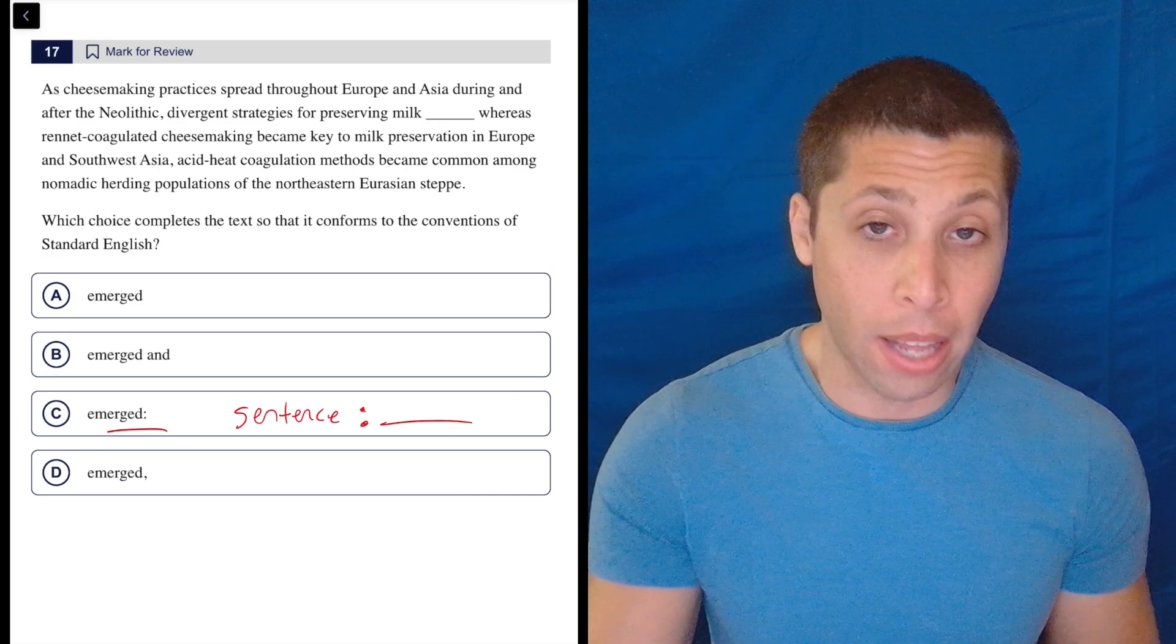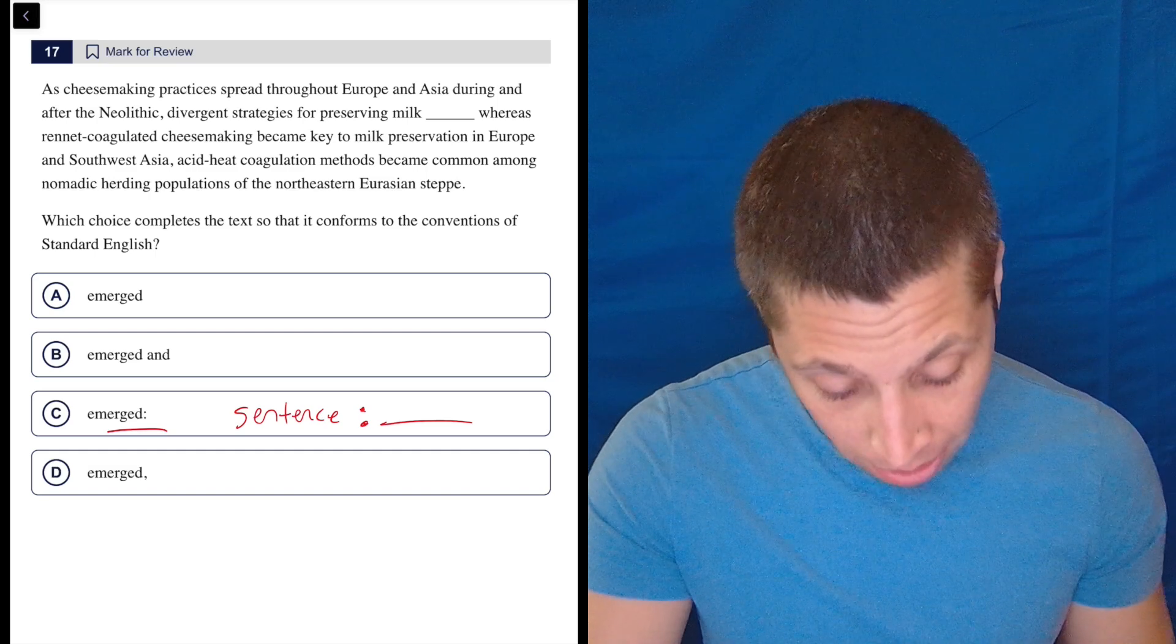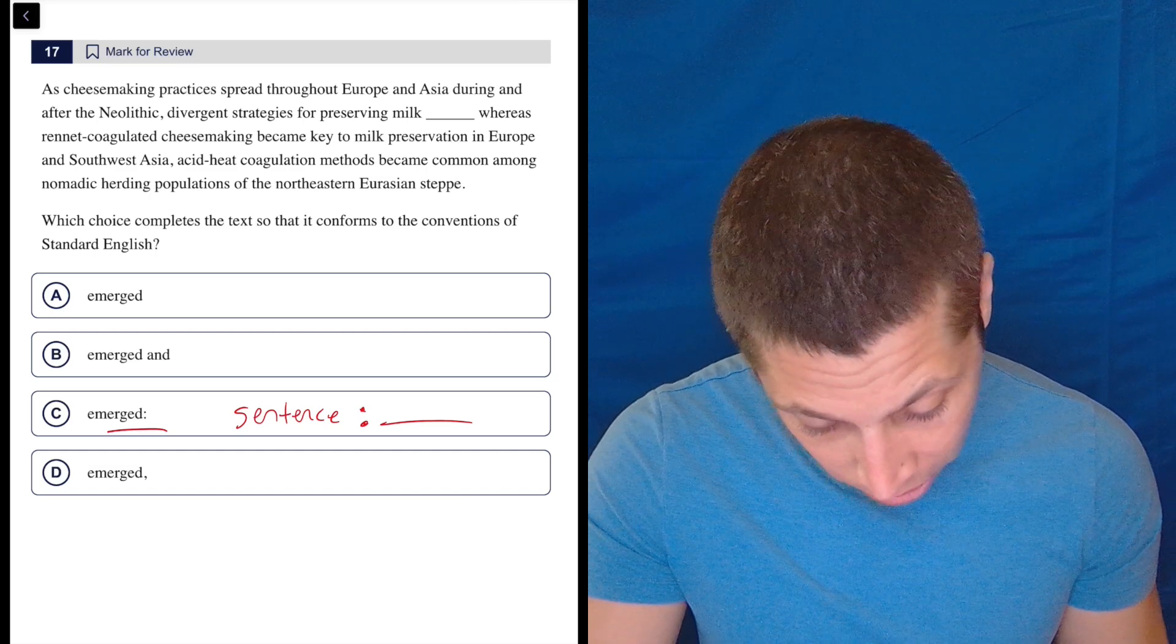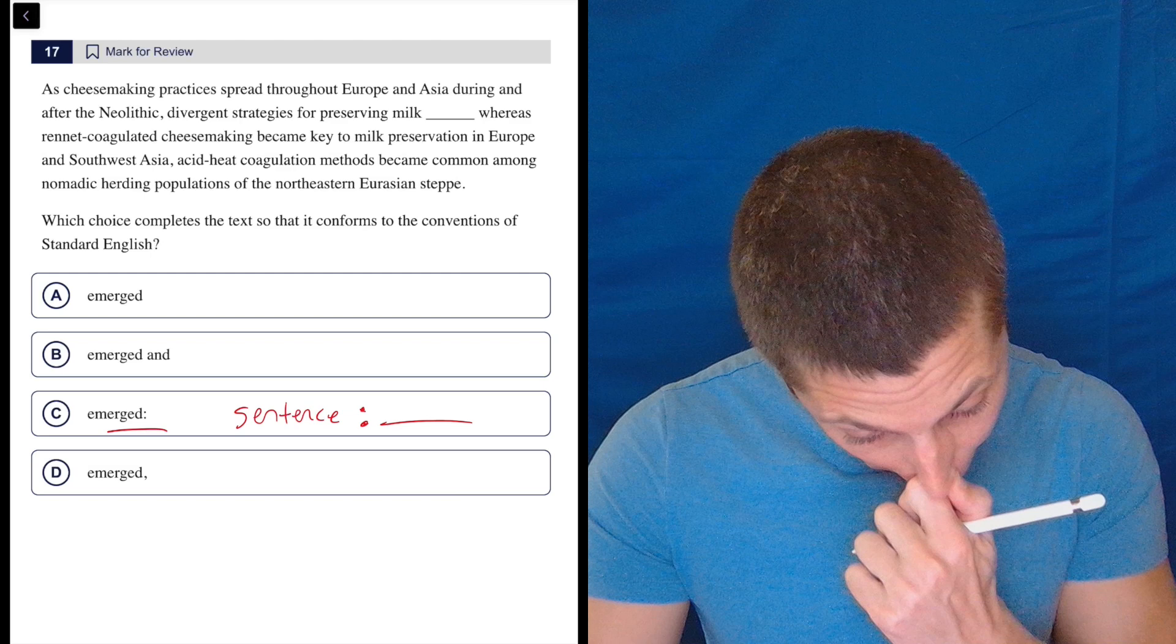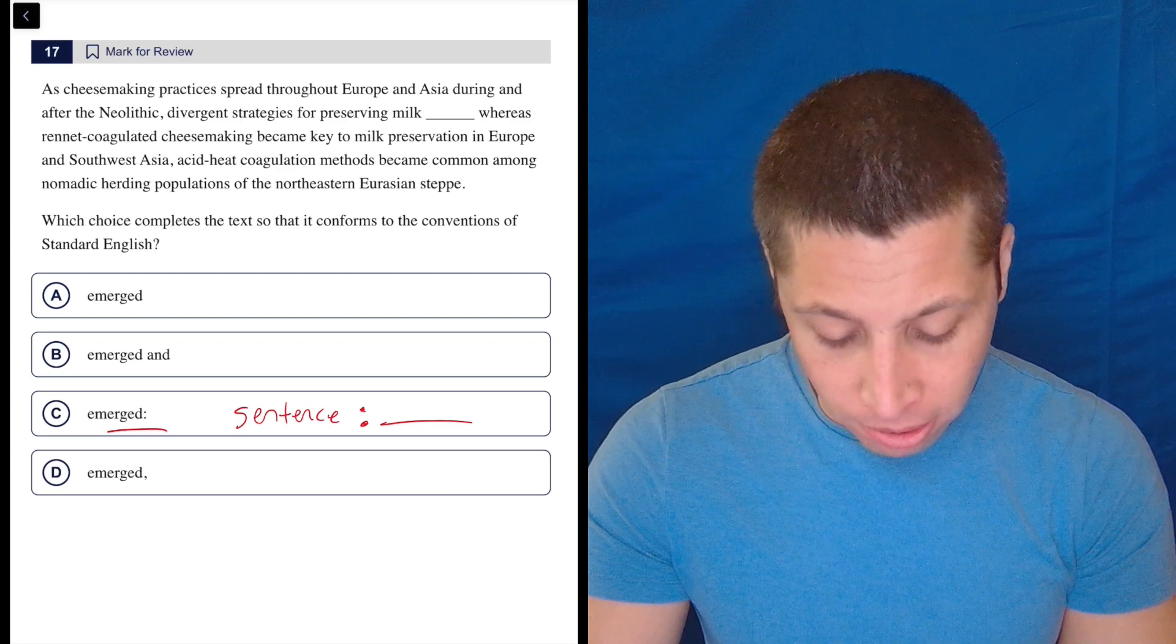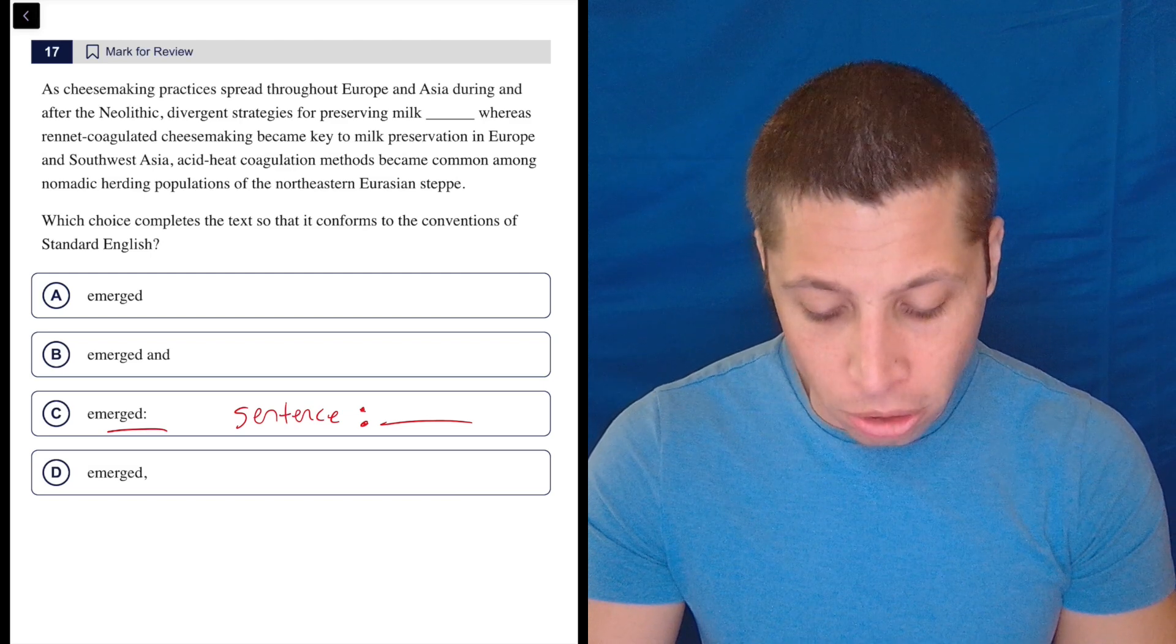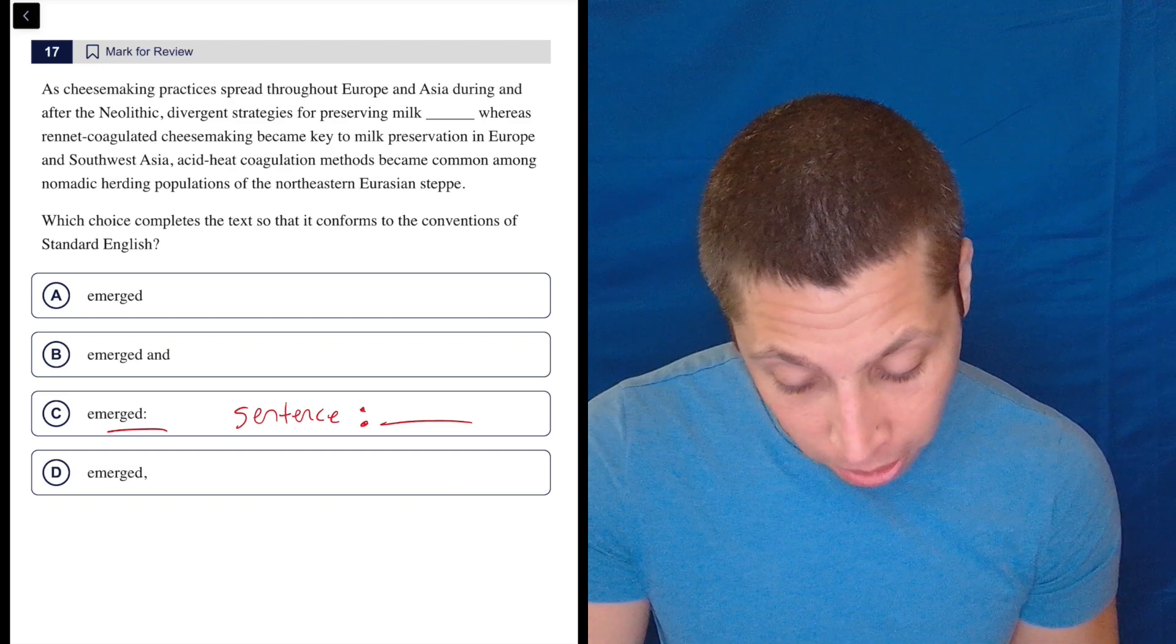So let's focus first on that initial part. Do we have a sentence beforehand? Otherwise, if we don't, we're stuck. So it's a long sentence. As cheesemaking practices spread throughout Europe and Asia during and after the Neolithic - so that's just an intro clause.